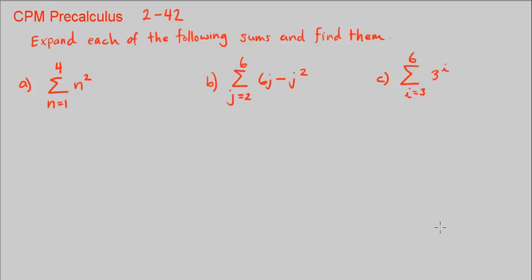This is CPM Precalculus Chapter 2, Number 42. Here we are asked to expand each of the following sums and then find the sum. We are given all these sums in sigma notation.